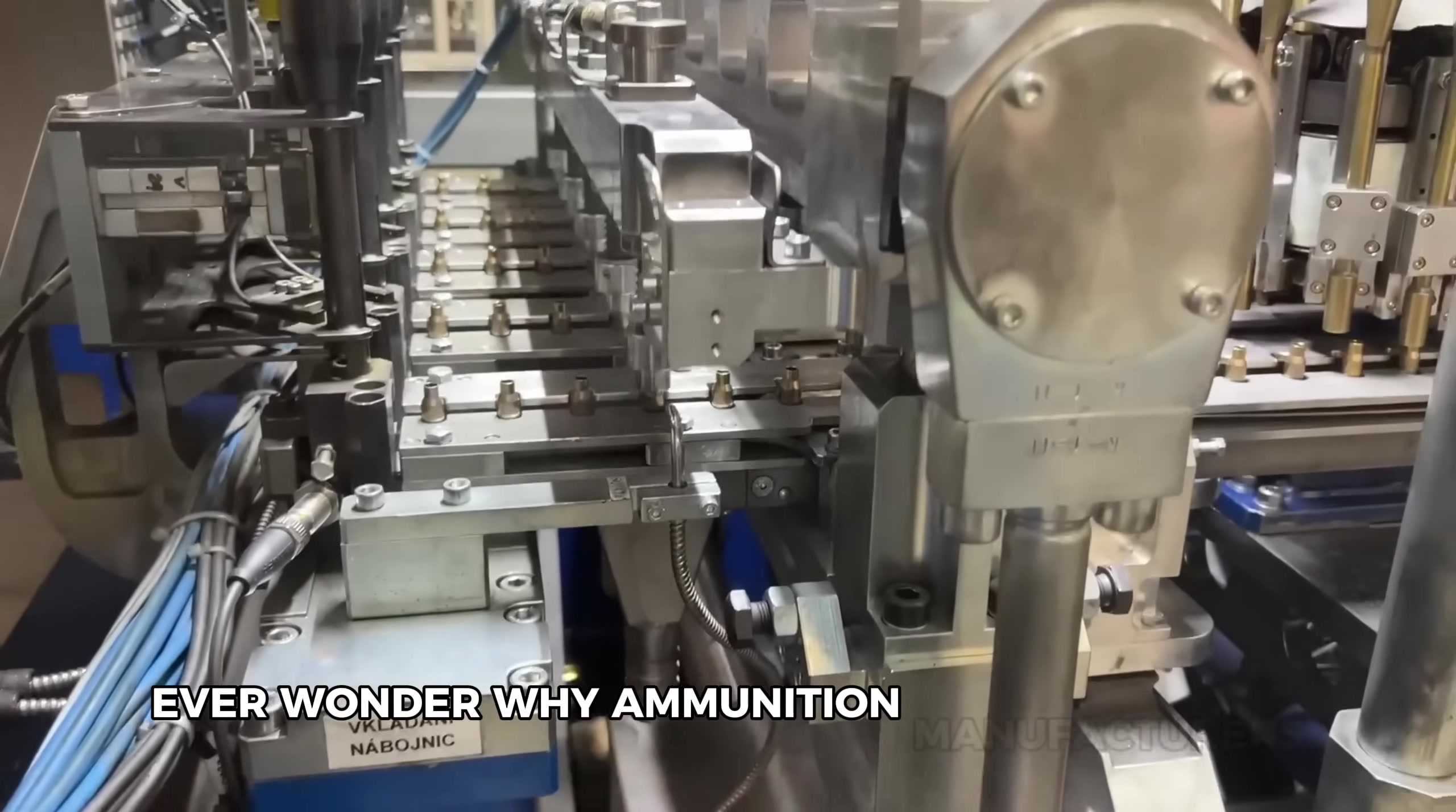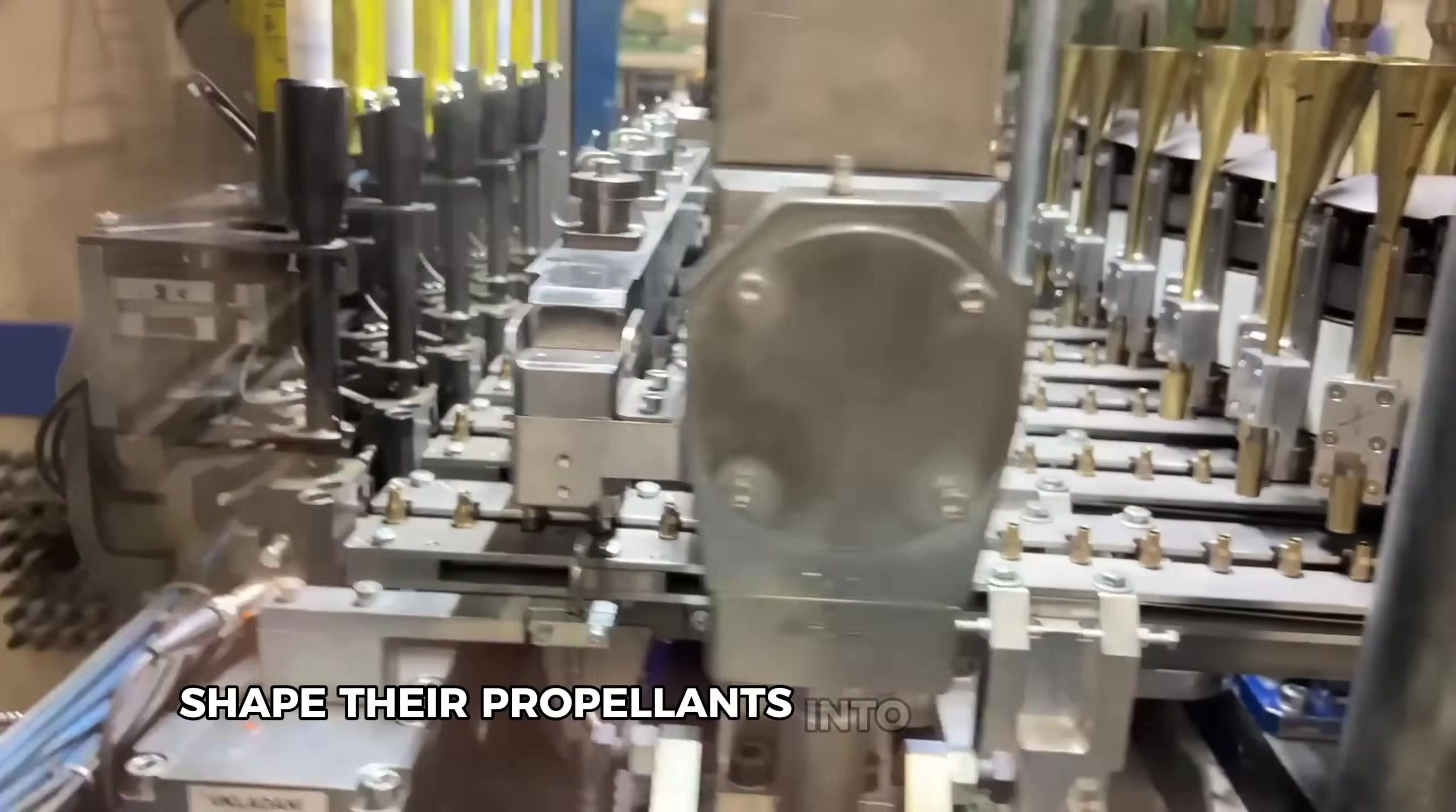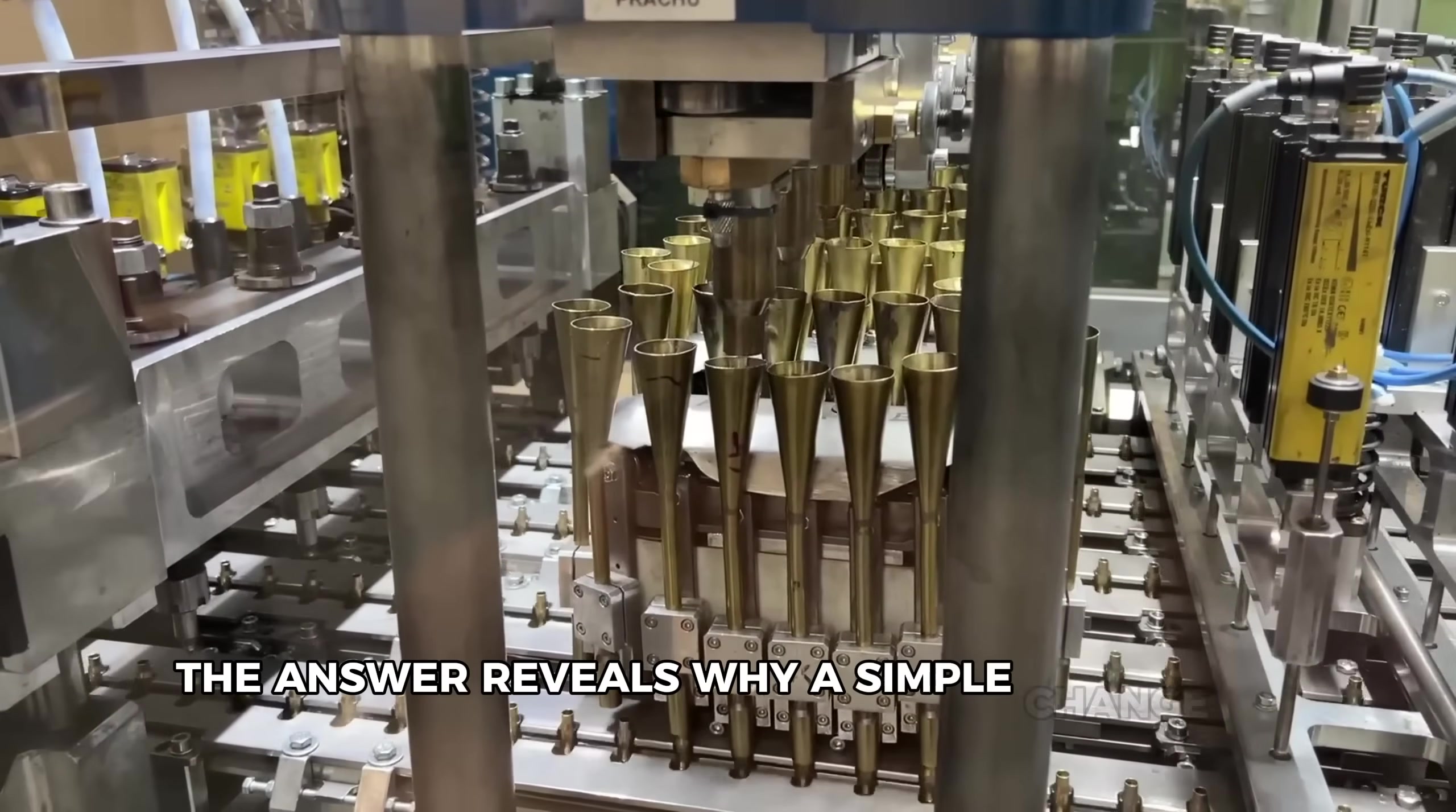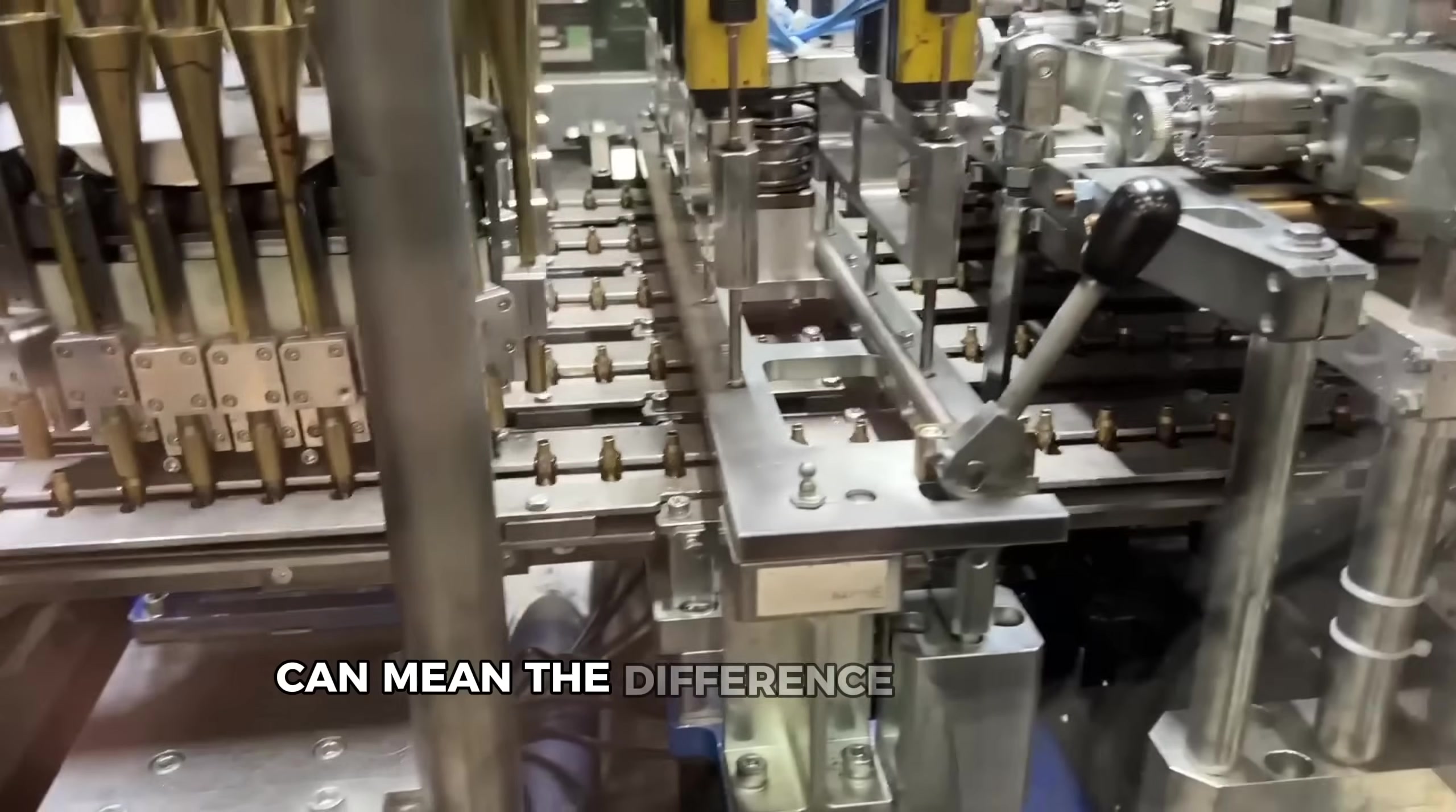Ever wonder why ammunition manufacturers shape their propellants into tiny cylinders, flakes, or balls instead of using actual powder? The answer reveals why a simple change in geometry can mean the difference between a controlled explosion and a catastrophic one.